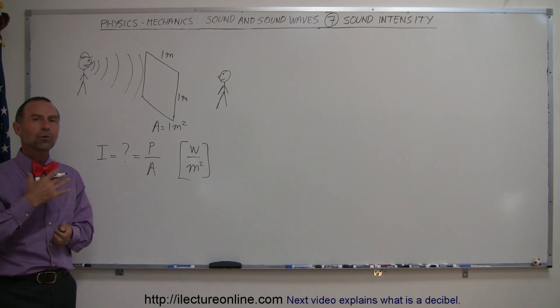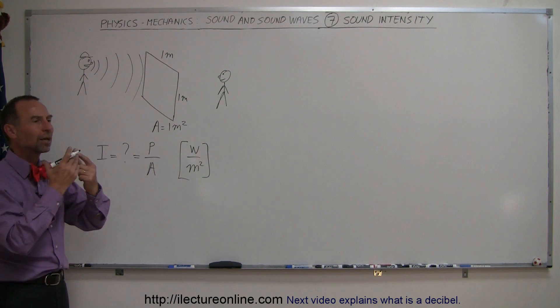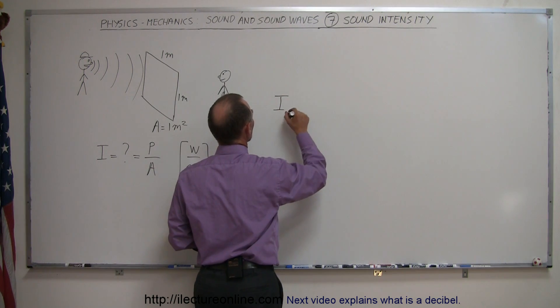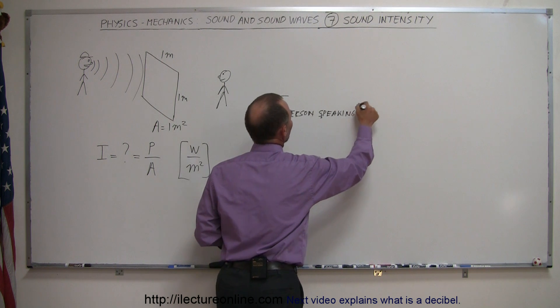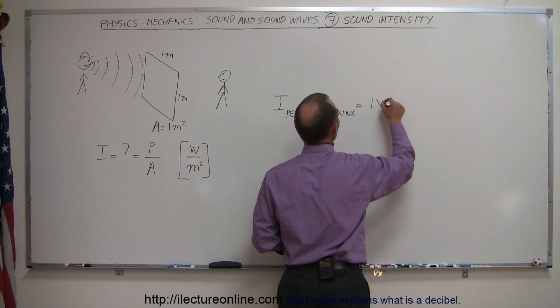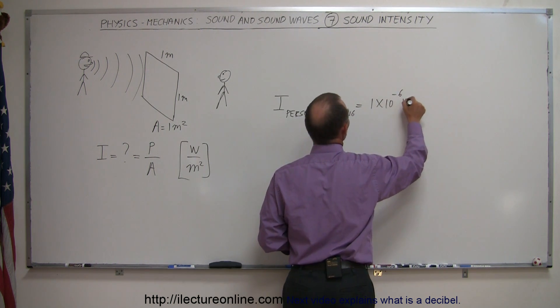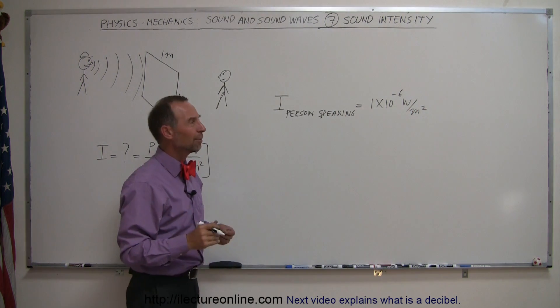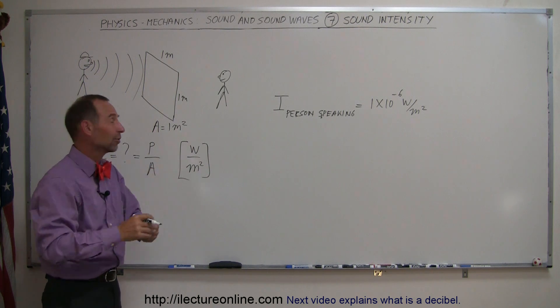For example, typically a person who's speaking, the sound coming out of a person under normal conversation... So the intensity from a person speaking is probably about 1 times 10 to the minus 6 watts per square meter. So that's a millionth of a watt per square meter, which is typically the sound that comes out of your voice.